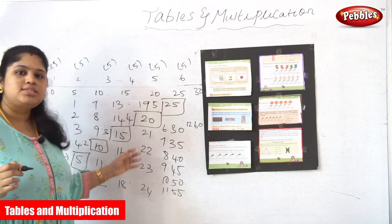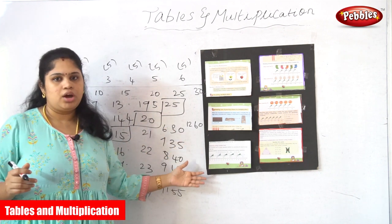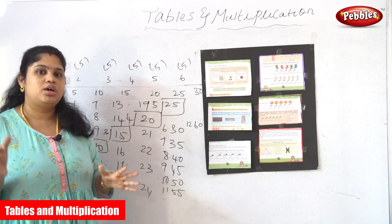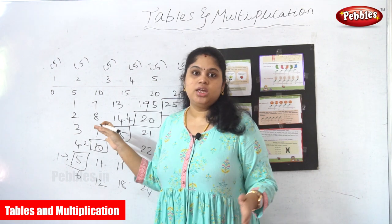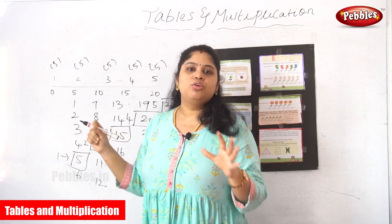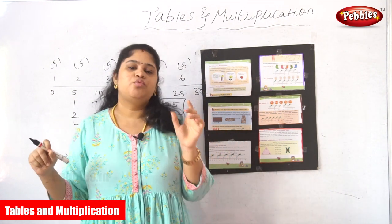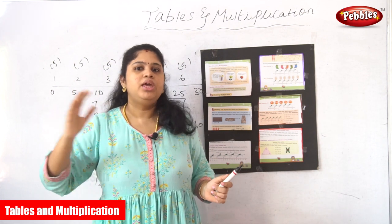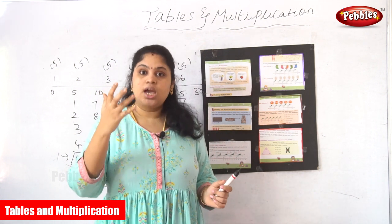The five times table majorly supports the clock system. If you know the clock, you see how the five tables support it. We depend on the five tables in our day-to-day life because without knowing the time we cannot do anything. For example, nowadays online classes change according to the time, so we need to be very conscious about time.